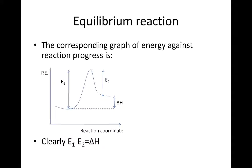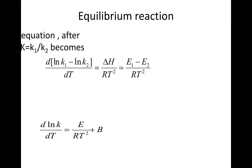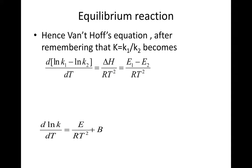Clearly as we have said, E1 minus E2 is equal to delta H. Hence Van't Hoff's equation, after remembering that K is equal to K1 over K2, becomes d into natural log of K1 minus natural log of K2 over dT is equal to delta H over RT squared, which is equal to E1 minus E2 over RT squared.